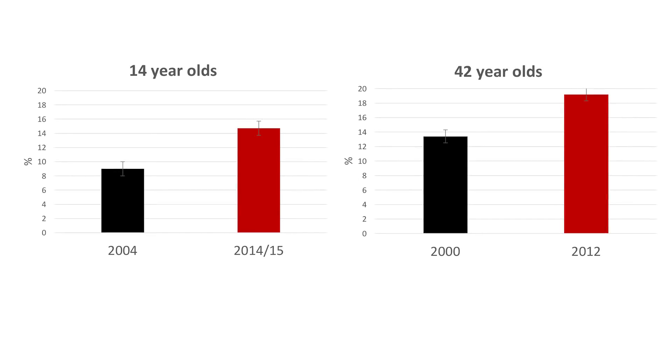And this problem is not going away. We've just finished analysis in 14-year-olds from 2014-15 compared to 14-year-olds just 10 years previously, and similarly 42-year-olds around 12 years apart. In both cases, the prevalence has increased substantially — about 6% in the 14-year-olds, going from around 9% to 15%. In just 10 years, this is the equivalent of almost two more teenagers in every secondary school classroom suffering from mental health problems than just 10 years before.